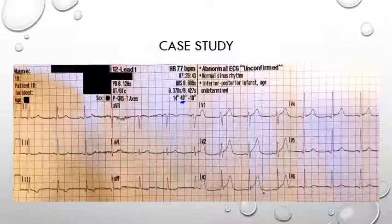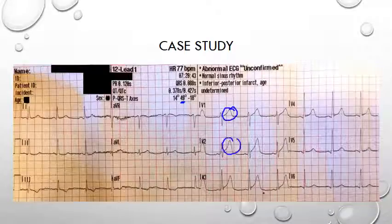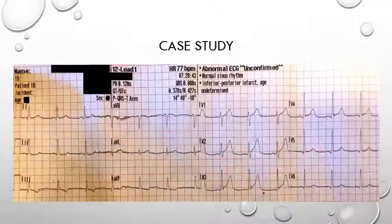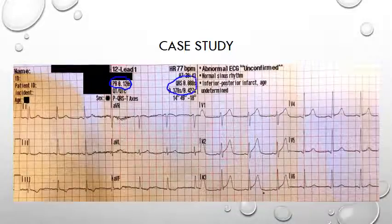The P wave morphology looks normal as does the QRS, but the T waves are large anteriorly. Looking at leads V1, V2, and V3, the T waves there are quite large — and we'll come back to those as this video is about hyperacute T waves. The PR, QRS, and QTc are all within the normal range, as shown by the computer measurements.